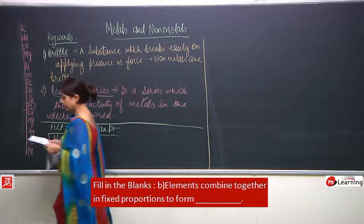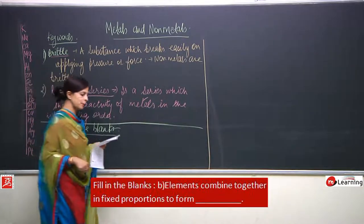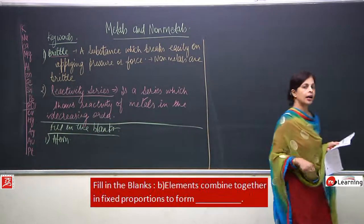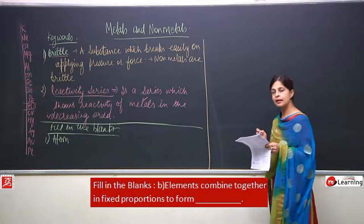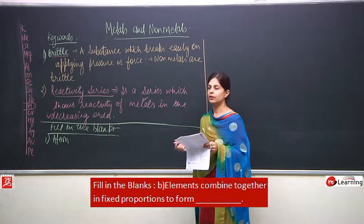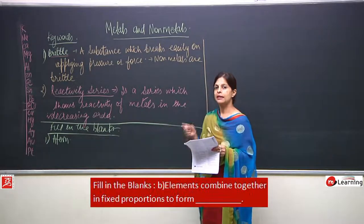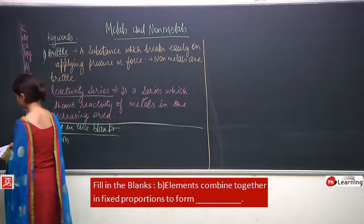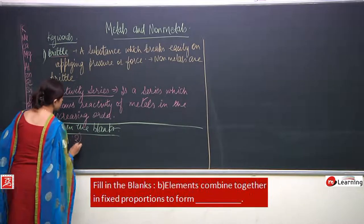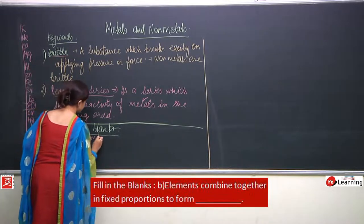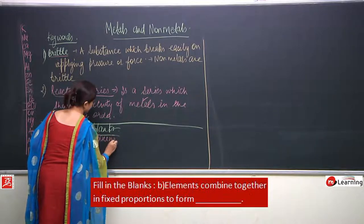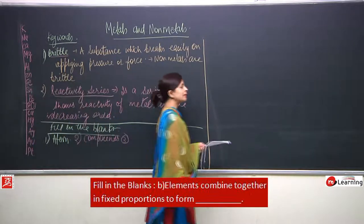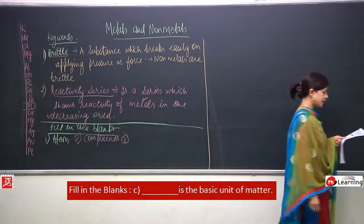Coming to the second one: elements combine together in a fixed proportion to form — we have done this before. I explained that elements combine together in a definite proportion; what they will form? They will form compounds.